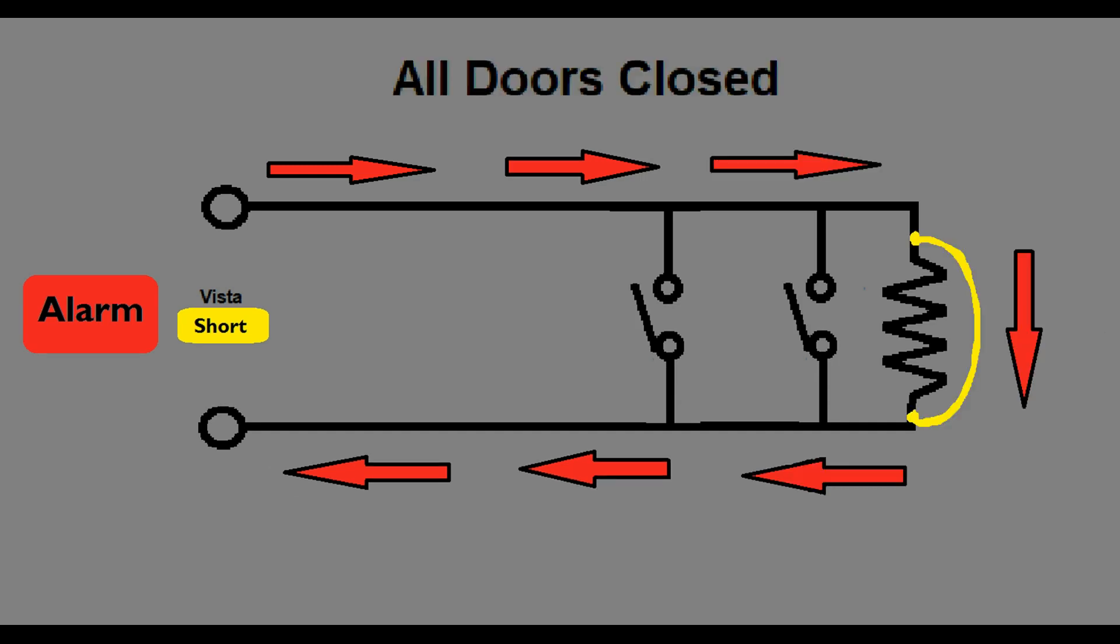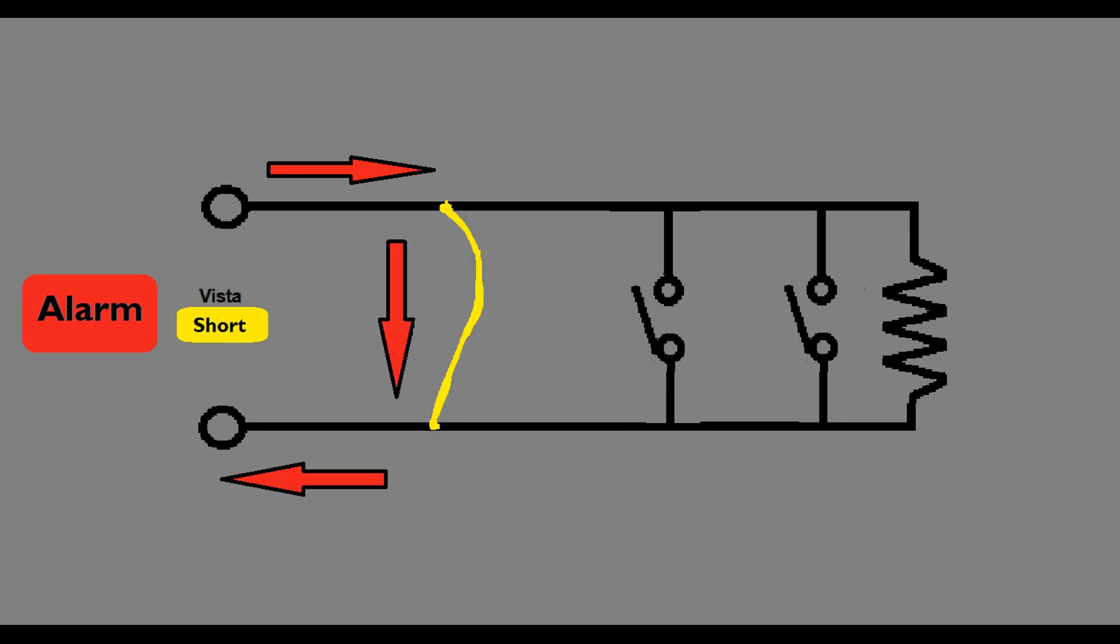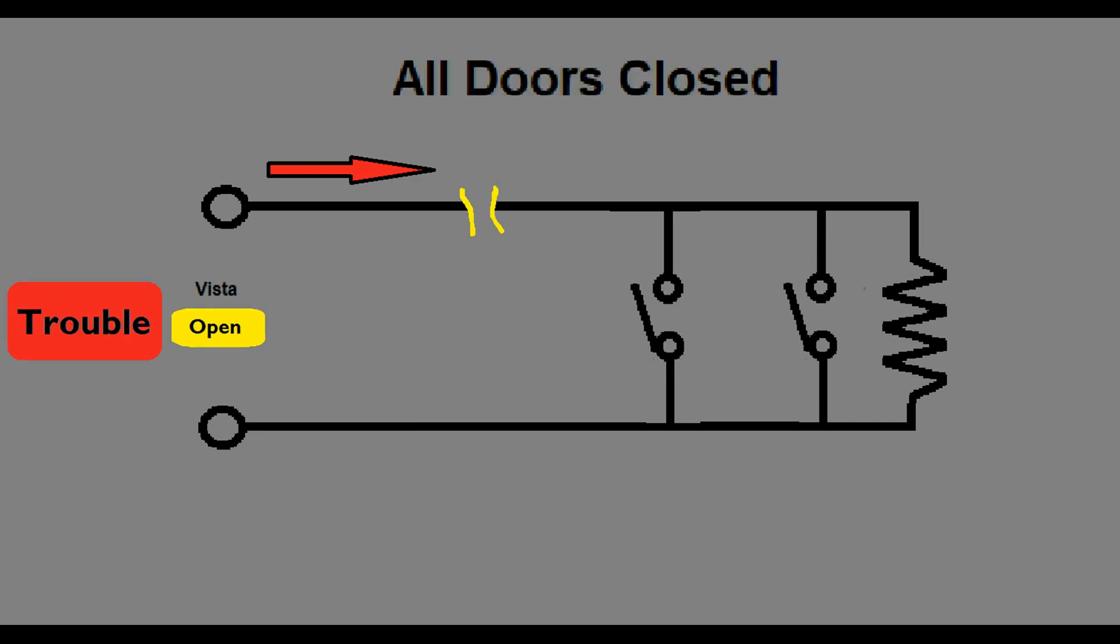Let's look at some abnormal conditions. What if your end of line resistor is shorted? To the Vista, it looks the same as an open door and the alarm will sound. A short in the wiring before the end of line resistor will also activate the alarm. An open wire, however, operates differently. The Vista expects to see a resistor or a short. If it sees an open on the wires in series with the resistor, it will sound the trouble alarm. If your end of line resistor opens, it'll sound the trouble alarm.